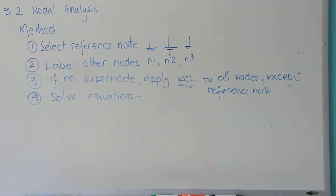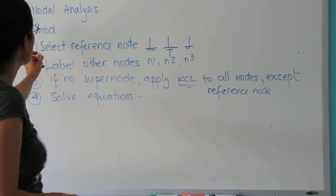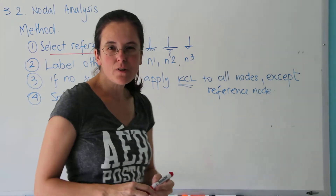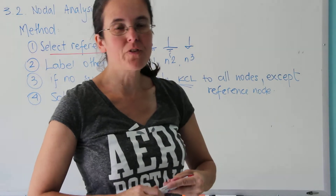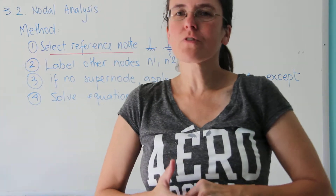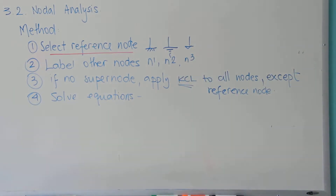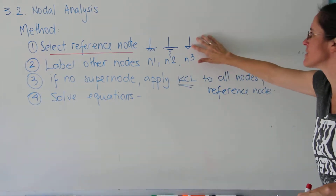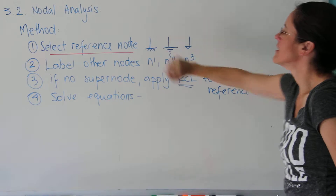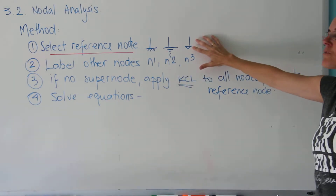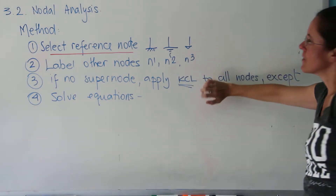There is a simple method. The first thing is to select a reference node in any circuit — we're going to find one node, usually called ground. These are different symbols like I've been doing in class for the reference node. This node is not going to be labeled.